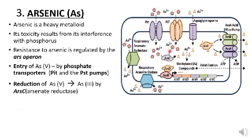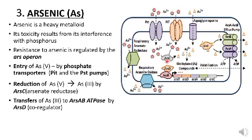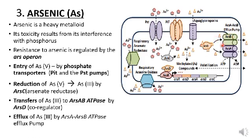In the cell cytoplasm, arsenic is reduced by the arsenic reductase complex which is ARS-C. The ARS-D complex, a metallochaperone, is transferred to the ARS-A and ARS-B efflux pump. The arsenic is effluxed out from the cell. ARS-R is a repressor; when arsenite is not present, this repressor occupies the operator and restricts its own expression as well as expression of other genes.